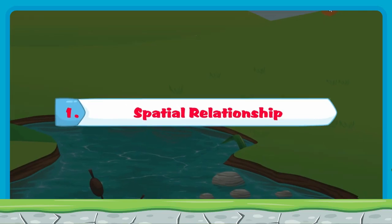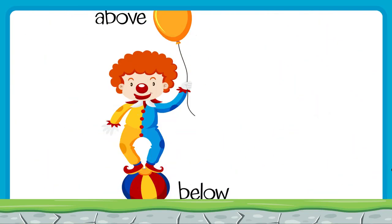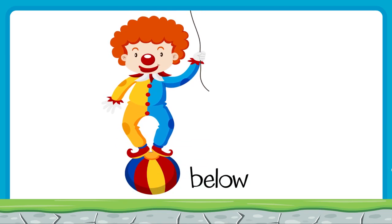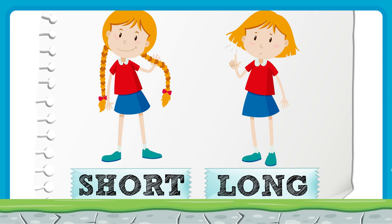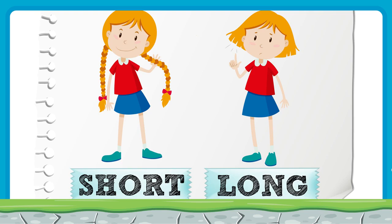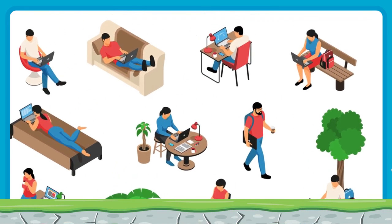Spatial relationship — S-P-A-T-I-A-L spatial, R-E-L-A-T-I-O-N-S-H-I-P relationship. Children, do you know what we mean by spatial relationship? Spatial relationship refers to our understanding of how objects and people move in relation to each other. We use our senses to observe objects and people in our environment. This spatial relationship specifies how some object is located in space in relation to some reference object.